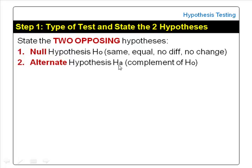The alternate hypothesis is also called the research hypothesis. The null hypothesis always assumes status quo — that is, the same or equal, no difference or no change. The alternate hypothesis is the complement of the null hypothesis, hence the two hypotheses are opposing in nature.